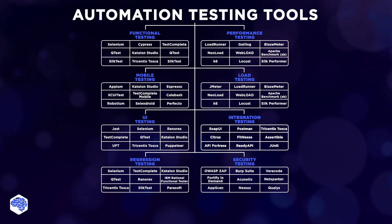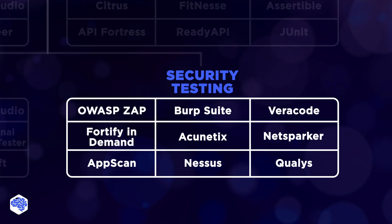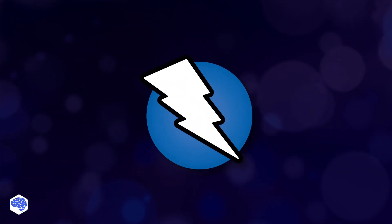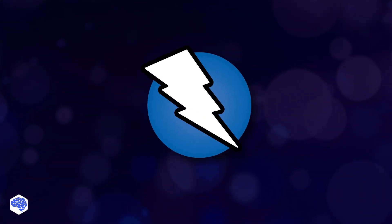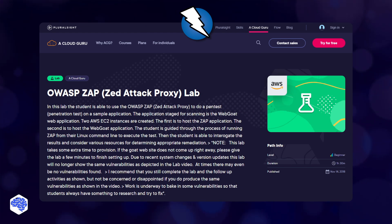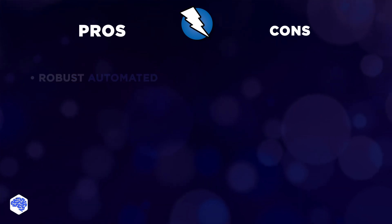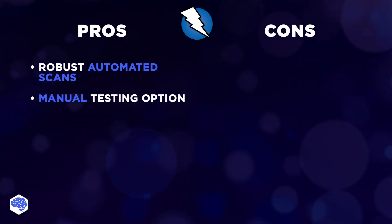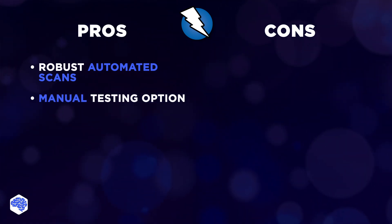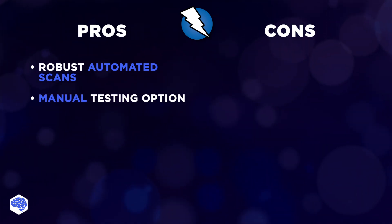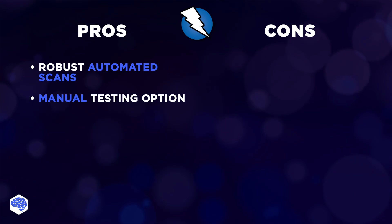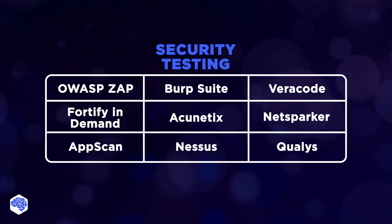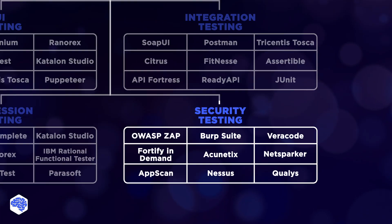Last but not least, security testing. To find vulnerabilities in web applications, we use OWASP ZAP. It helps identify security weaknesses through automated scans and manual testing, aiding in the protection of web applications from potential threats. However, please note that like many security testing tools, it may generate false positives that require manual verification.